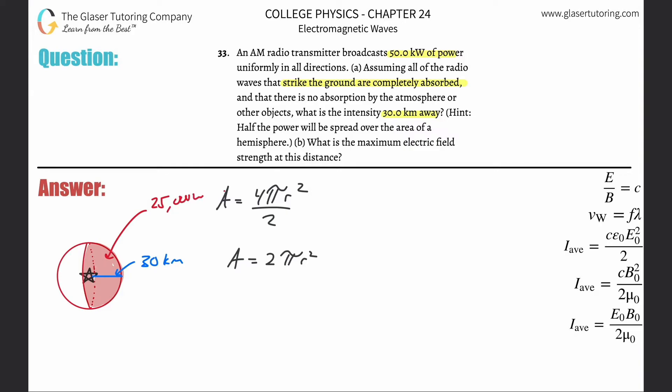Now we can calculate the intensity, because intensity is simply the power divided by the area of which that power is being supplied. So the power over half that area is 25,000 watts divided by 2π times the radius. What's the radius? 30 kilometers, which works out to be 30,000 meters, and you have to square it.